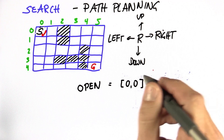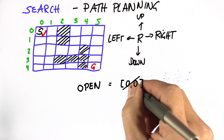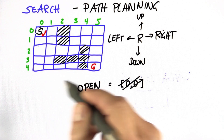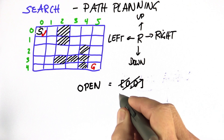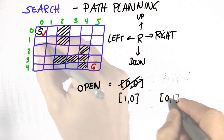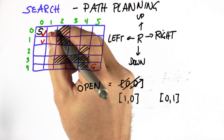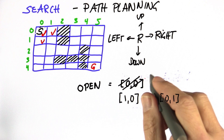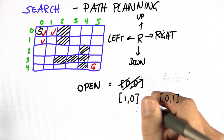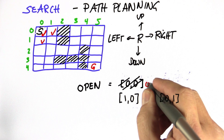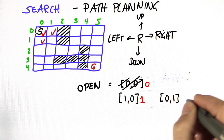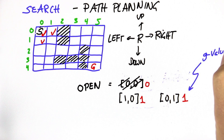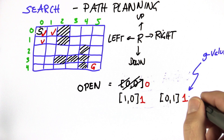So what I do next is expand this state. I take it off my open list and look at all the successors, of which there are two: (1, 0) and (0, 1). Those two are now expanded, so I'll check them. One last thing I maintain for each of these states on the open list is how many expansions it took to get there. So this was 0 over here; it's 1 for these two states in red. That's called my g value. When I'm done with planning, this will be the length of the optimal path.